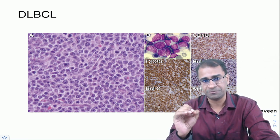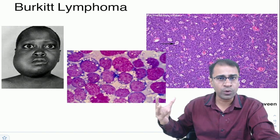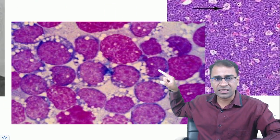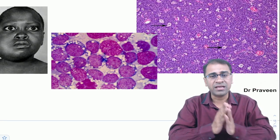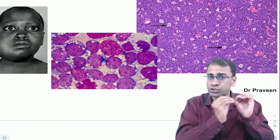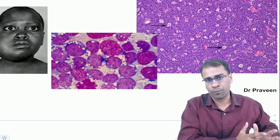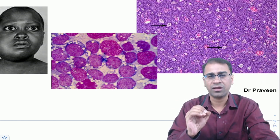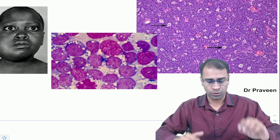Next is Burkitt lymphoma. Classically it presents with a jaw/mandibular swelling and biopsy shows a starry sky appearance — macrophages scattered among tumor cells. The tumor cells show ALL L3 morphology on bone marrow examination. The key gene is c-MYC on chromosome 8; the main translocation is t(8;14), with variants t(2;8) and t(8;22). The endemic African variety is 100% EBV positive. Treatment is R-CHOP: rituximab, cyclophosphamide, doxorubicin, vincristine, and prednisolone.